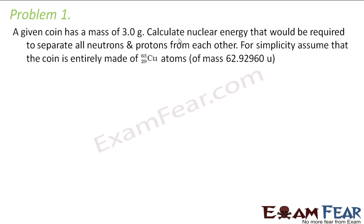It says a given coin has a mass of 3 grams. Calculate the nuclear energy that would be required to separate all neutrons and protons from each other. For simplicity, assume that the coin is entirely made up of copper-63 atoms of mass 62.92960 atomic mass unit. So what is the mass of this copper coin? Mass is given as 3 grams, and the atomic mass of copper is also given as 62.92960.